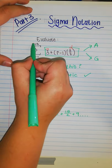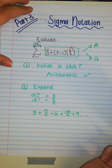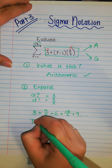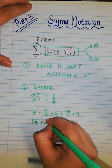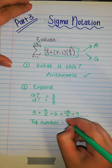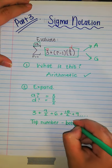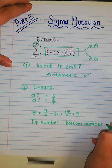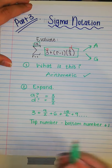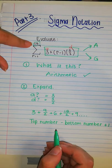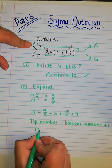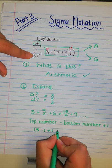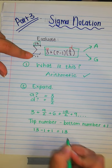Because up here, n, they gave me n. So, my number of terms is going to be the top number minus the bottom number plus one. So, in this case, my top number is going to be 13. My bottom number is one minus one plus one. So, that will give me a total of 13 terms.